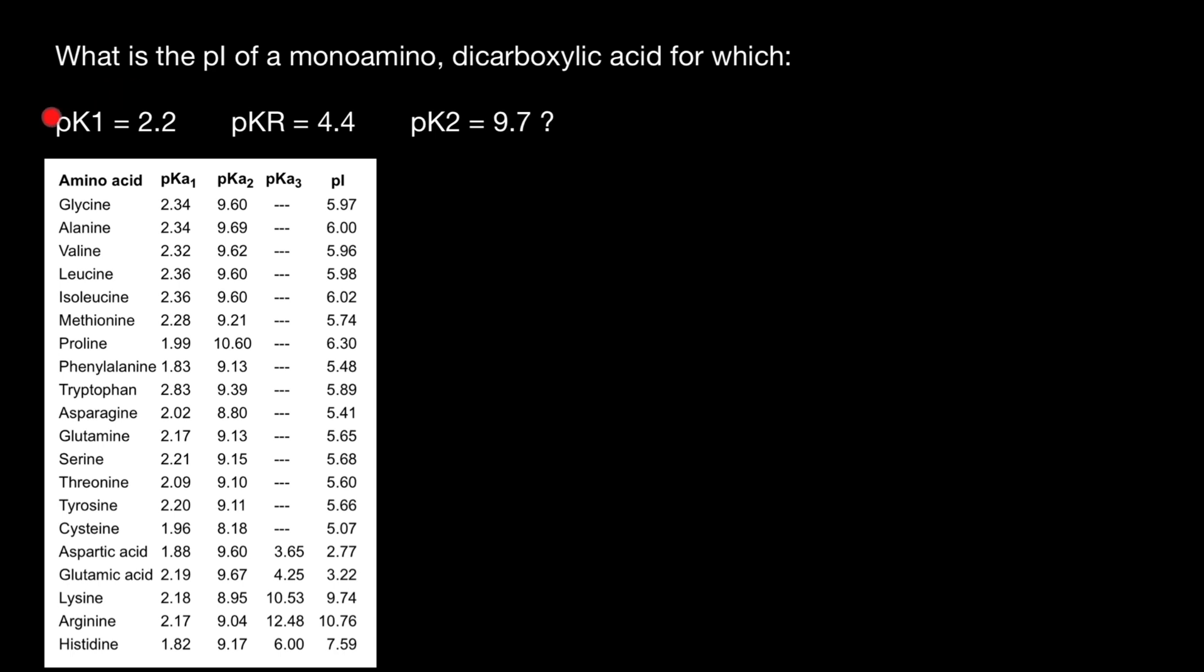One more time, in order to solve this problem, we don't need this table. I'm just going to use this table for your deep understanding. Let's analyze. We have pKa1 = 2.2. Because as I said, monoamino dicarboxylic acid has to be aspartic acid or glutamic acid. So pKa1 = 2.2, and 1.88 here, 2.19 here. So we now know that this has to be glutamic acid.